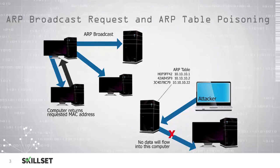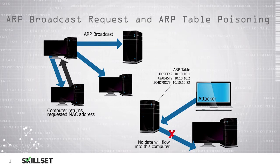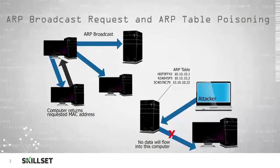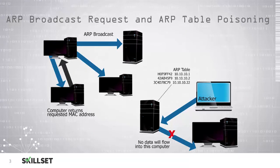When an ARP table poisoning occurs, an attacker is able to respond to the request and provide incorrect information and poison the ARP table. Once this occurs, data that is intended for one recipient will no longer be sent to that recipient and instead can be sent to the computer of the attacker's choice.